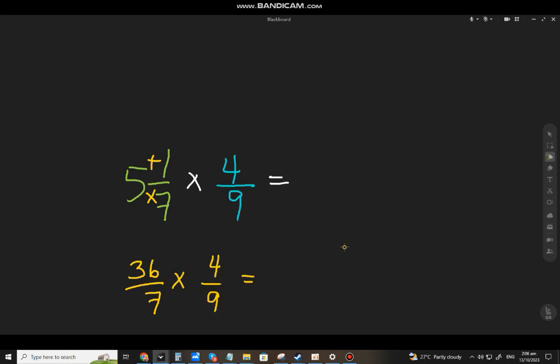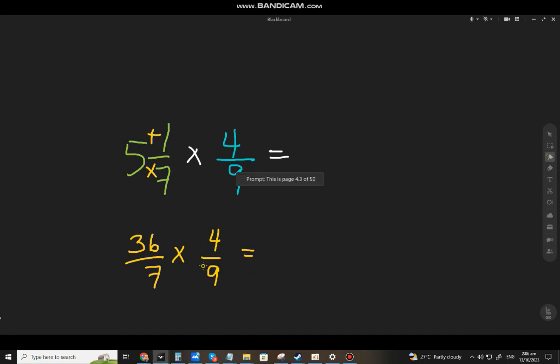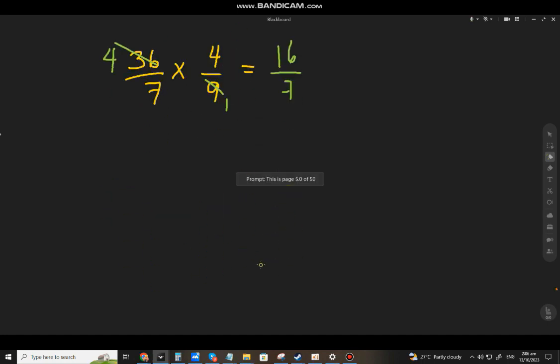Multiply mo siya ng 4 over 9. But again, if you can cancel na, as much as possible diagonally. Yung 36 at 9, ang GCF nila, that will be 9. Pwede mo sila divide ng 9 parehas. So, that will be 4 na lang ito. Ito naman 1. Mas madali. 4 times 4, 16. And 7 times 1, that will be 7.